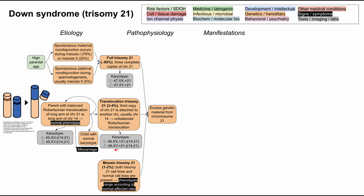These are the karyotypes for the balanced and unbalanced translocations. The balanced translocation has 45 chromosomes, with the translocation noted as an extra piece of chromosome 21 on chromosome 14. In the unbalanced Robertsonian translocation, they have the normal chromosome count, but there's this extra piece of chromosome 21 on chromosome 14 in addition to the other two copies of chromosome 21 — causing the excess genetic material from chromosome 21 that produces Down syndrome.